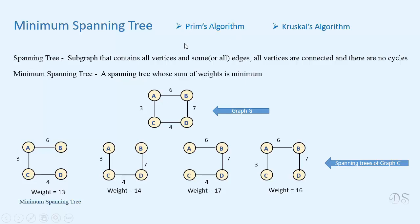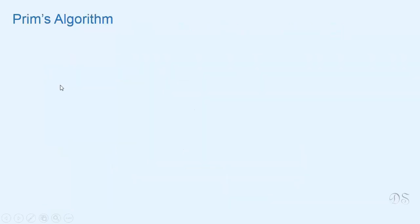In this course, we will learn about two algorithms for finding the minimum spanning tree of a graph. Both of these algorithms use the greedy approach. In this video, we will learn about Prim's algorithm, which is used for creating a minimum spanning tree. The procedure of Prim's algorithm is somewhat like that of Dijkstra's algorithm.